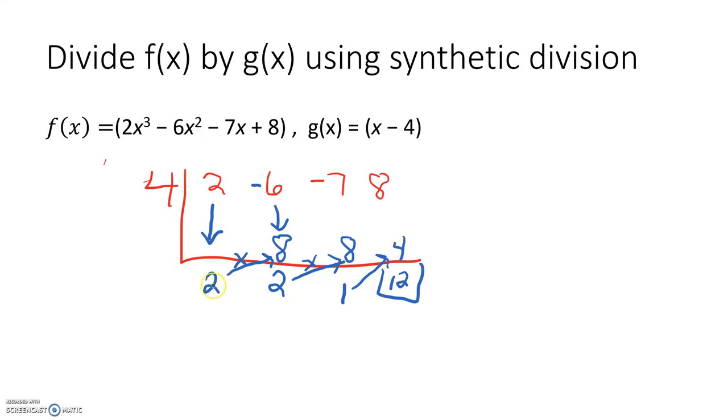Here, we see that we started with 2X cubed. We divided out one of the X's, so that means this is X squared. So this is X and this is my constant, and this is our remainder. So we would write 2X squared plus 2X plus 1 plus our remainder over our divisor. Because we had a remainder other than 0, it is not a factor.